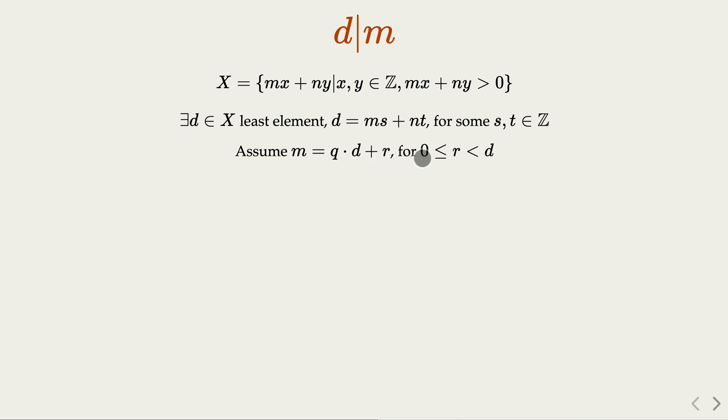this r is less than d. So r is greater than or equal to zero. So we need to prove that r is zero, so that d is indeed a factor of m. So how do we go about that?